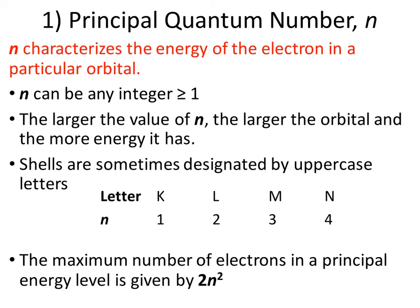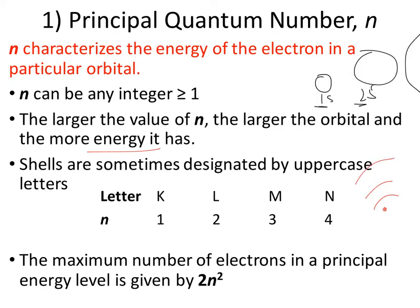The principal quantum number talks about the energy of the electrons in that particular orbital. The bigger the value of n, the bigger the orbital. Remember the 1s orbital — it was a sphere — and then we had our 2s orbital, which is a lot bigger. They're both spheres, as characterized by the s, but as we increase the number from 1 to 2 to 3, the size gets bigger. It has to deal with potential energy — the potential energy increases as you go farther away from the nucleus. So the bigger the orbital, the more energy it will have.